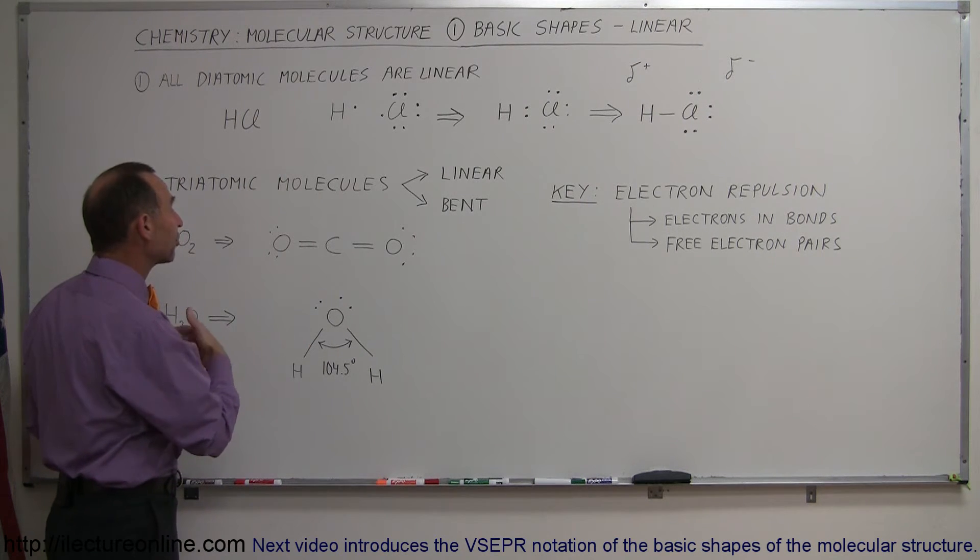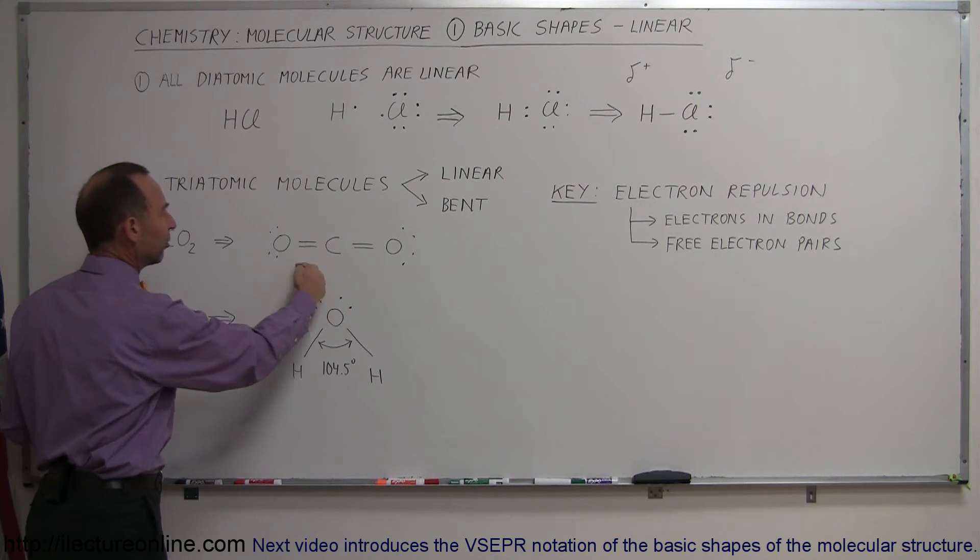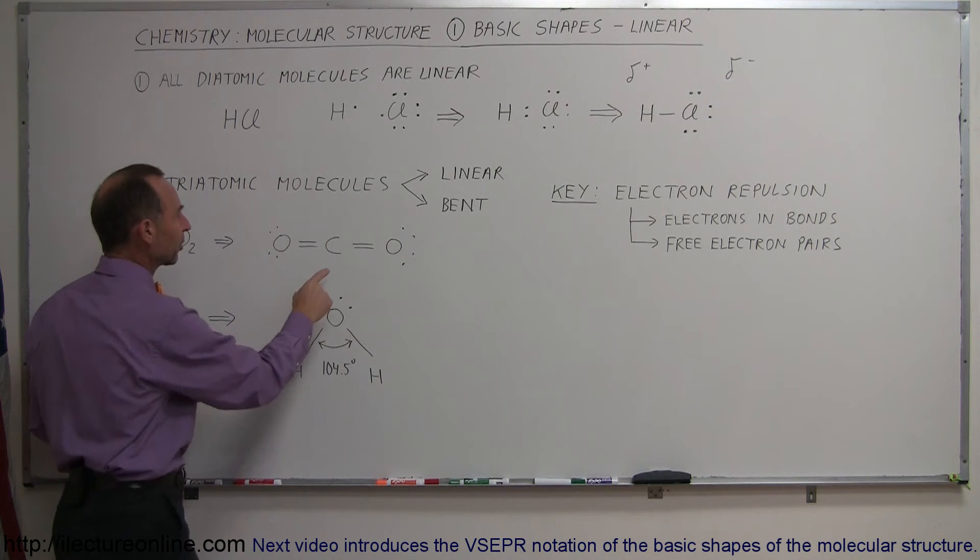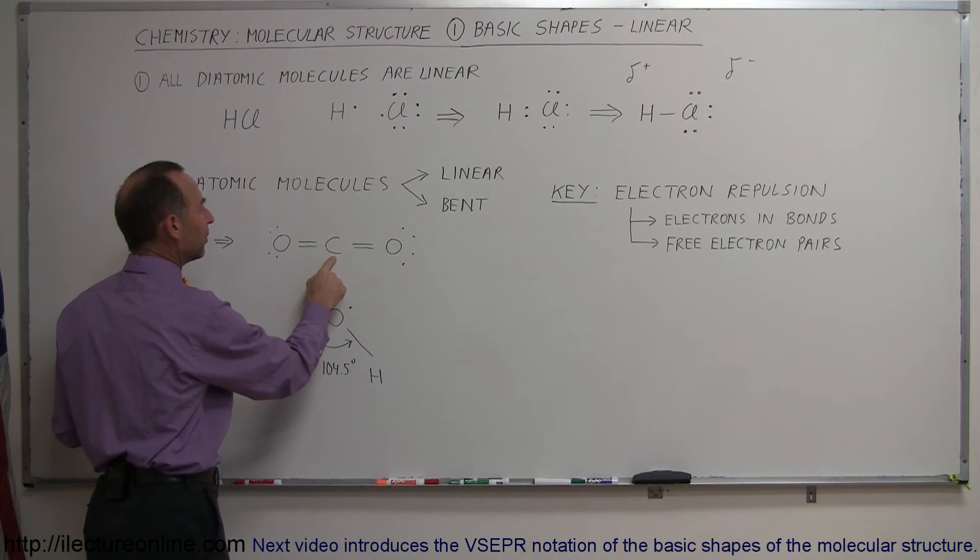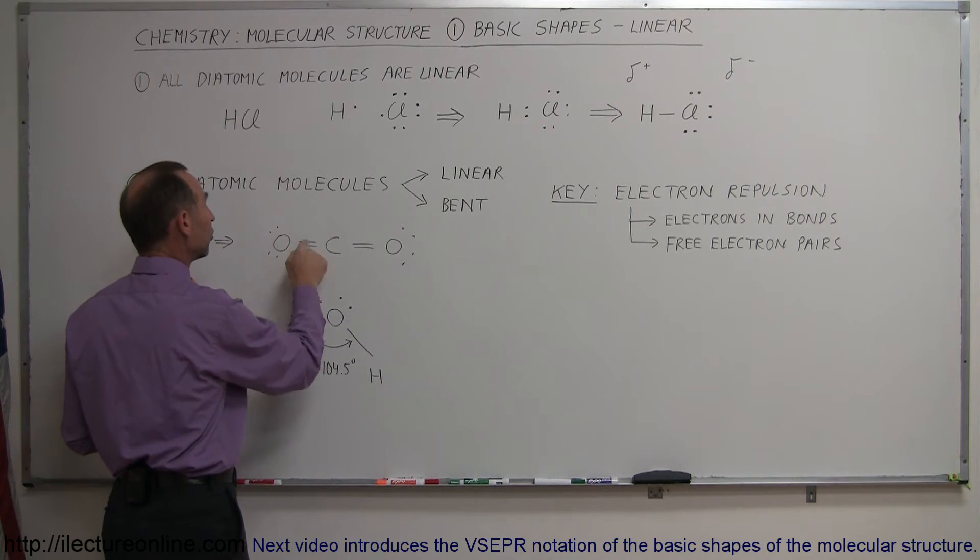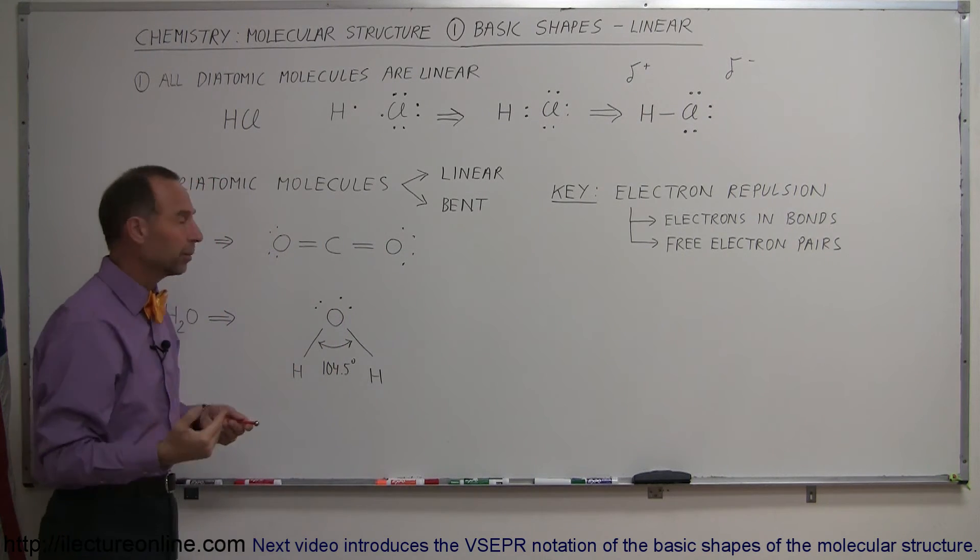In the case of carbon dioxide, if we take a look and see what that looks like, this is the Lewis structure of a CO2 molecule. Notice that the carbon in the center has used all of its four available electrons to make bonds - two with this oxygen, two with this oxygen - so it has no free electrons available.